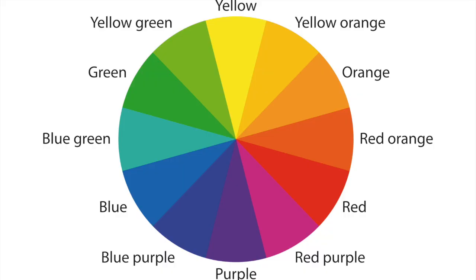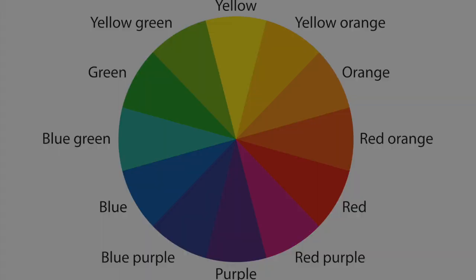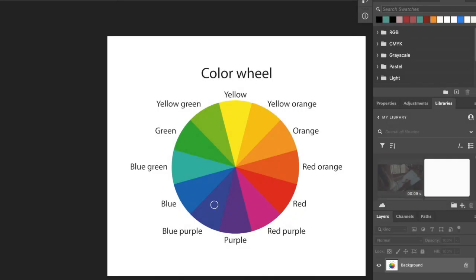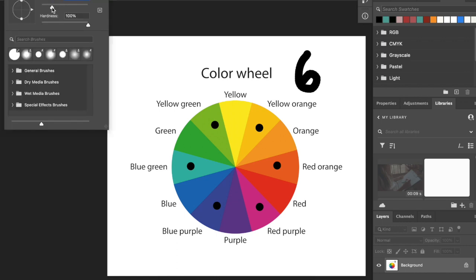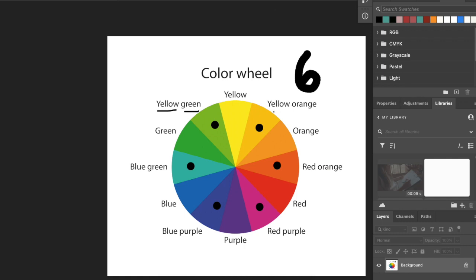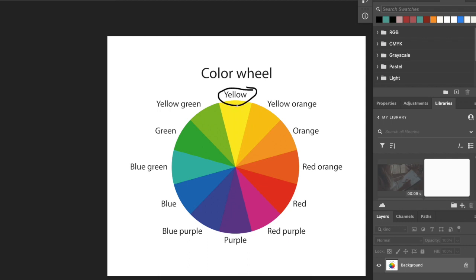Secondary colors are those created by mixing two primary colors. These are green, purple, and orange. Tertiary colors, also known as intermediary colors, are those that are a mixture of a primary and secondary color. They're a little more complicated, but they're easy to identify. For example: yellow-orange, blue-green, and yellow-green. They're easily identifiable because they always have two colors in their name, and they always have a little more of one color than another. Yellow-orange has a little more yellow in it than red. Remember, yellow and red mixed together make orange, but to make yellow-orange, you make sure there is more yellow than red in the mixture.